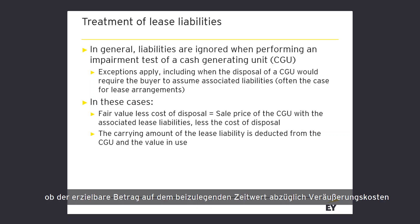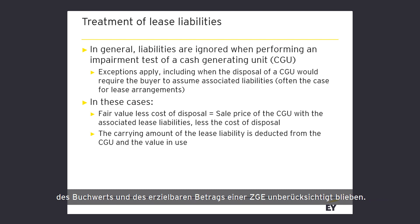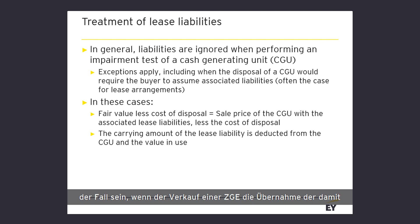The recognition of right-of-use assets with corresponding lease liabilities has raised questions about the application of the impairment test. The treatment of these liabilities may differ depending on whether the recoverable amount is based on the asset's fair value less cost of disposal or value in use. In general, liabilities are ignored when performing an impairment test of a CGU, meaning that both the carrying amount of the liabilities and the respective future lease payments would be ignored when determining the carrying amount and the recoverable amount of a CGU. However, there are exceptions to this general rule — for example when the disposal of a CGU would require the buyer to assume the associated liabilities.